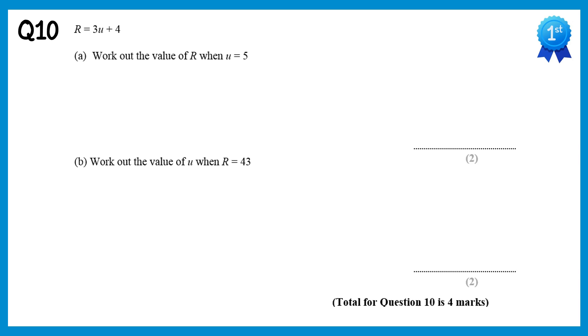For this question we need to find r when u is 5. So if we write out the formula again, but substitute u for 5, then we have r equals, it's 3 times u, but we know u is 5, and then add 4. If you work this out, 3 times 5 is 15, and then add 4 is 19.